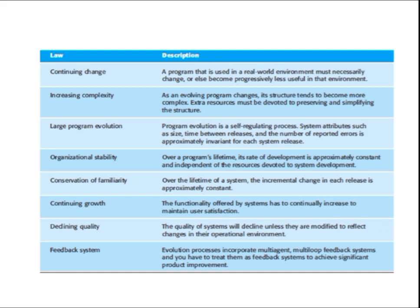The eighth law is the Feedback System: the evolution process should always incorporate a multi-loop feedback system, because you need feedback for the improvement of your software. You need to collect feedback from users of the software, and thereby you can improve it continuously. When you have a feedback system, you can collect feedback from your customers and continuously improve your software without any problems.